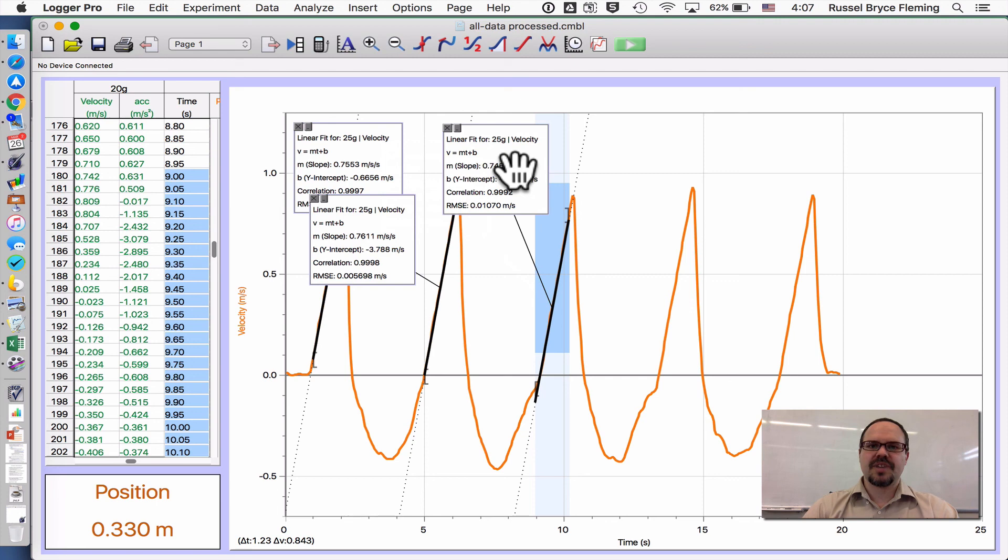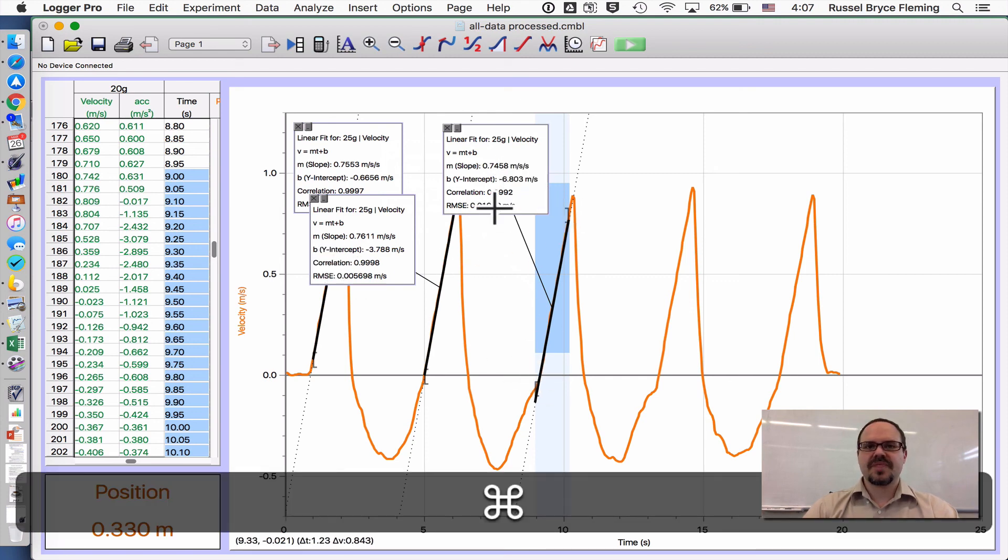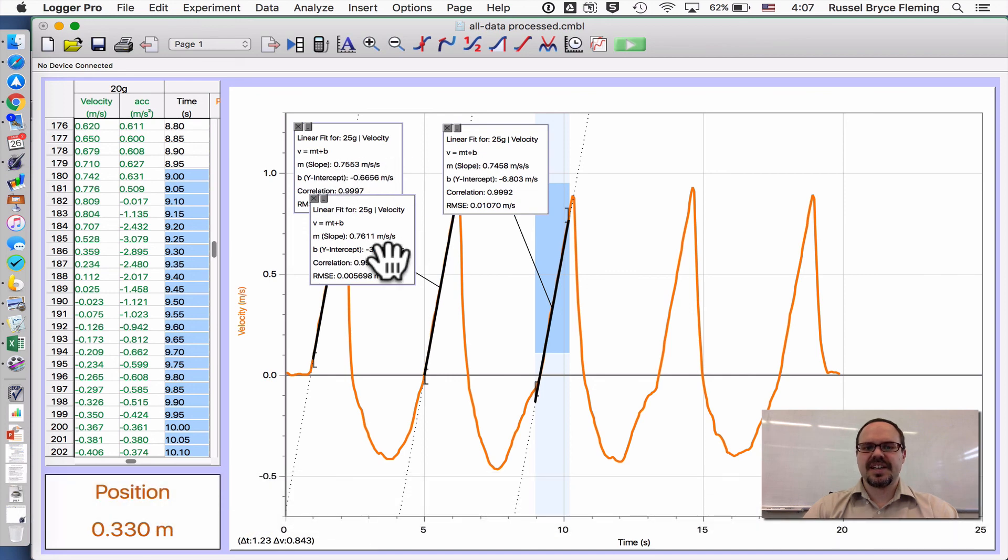So the gradient of velocity-time graph is equal to the acceleration. I can then place that in my Excel table.